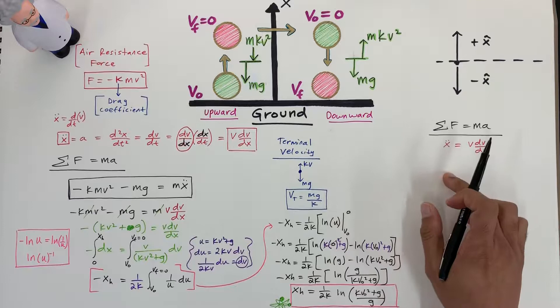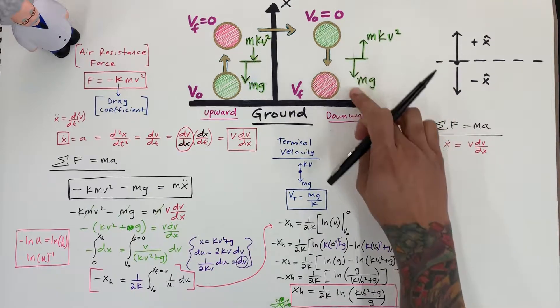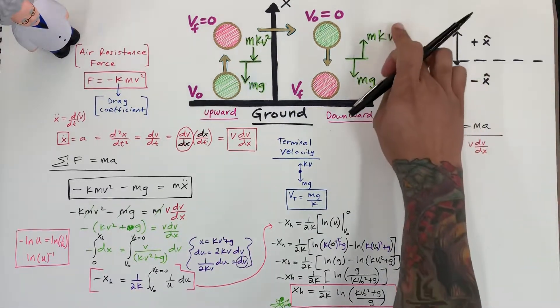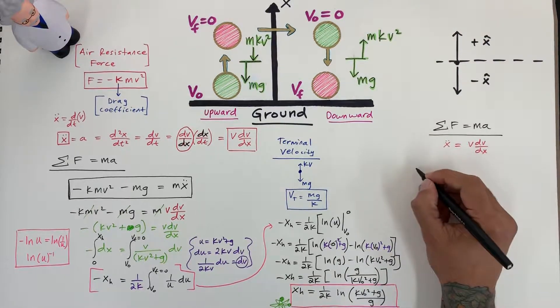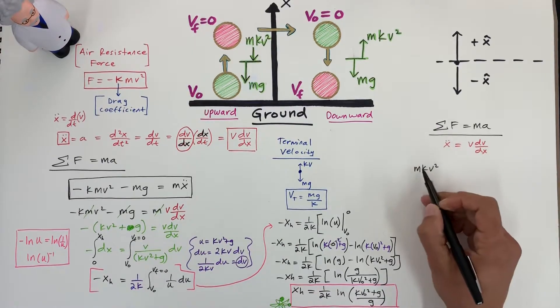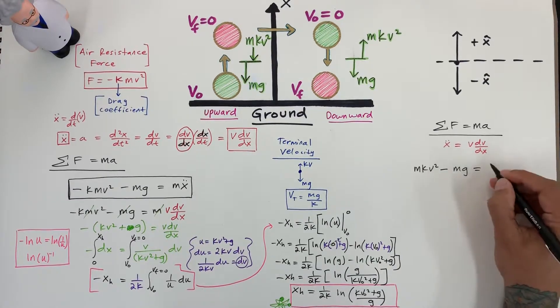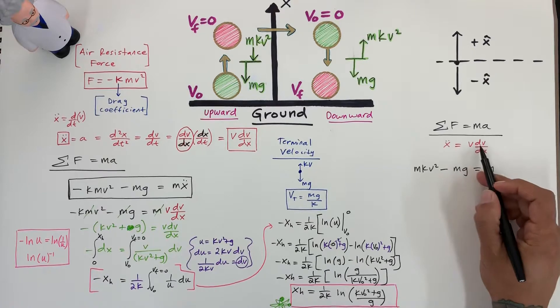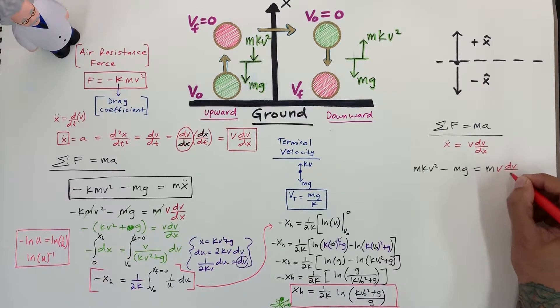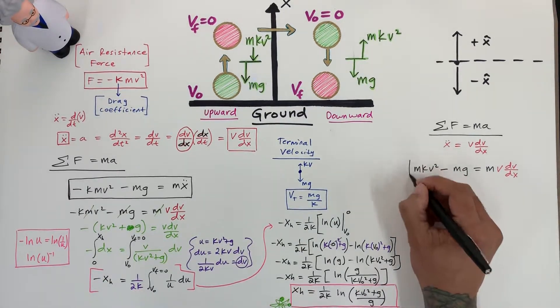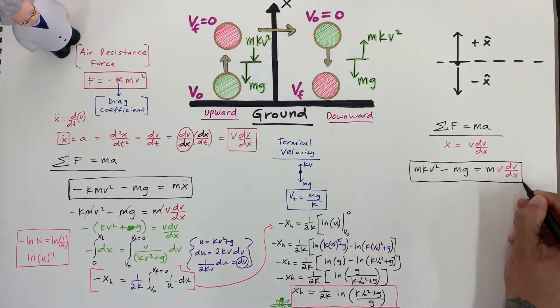In this problem here, let's take a look. If we're at the top and we're coming down, this mg is negative because it's in the downward direction, and this force is positive because it's opposing the motion. So I'm going to write m k v squared positive minus mg, and that's all going to be equal to m times a. So let's write v dv dx. This is the most important part, the setup. Once you got that, everything else is a bunch of integrals.